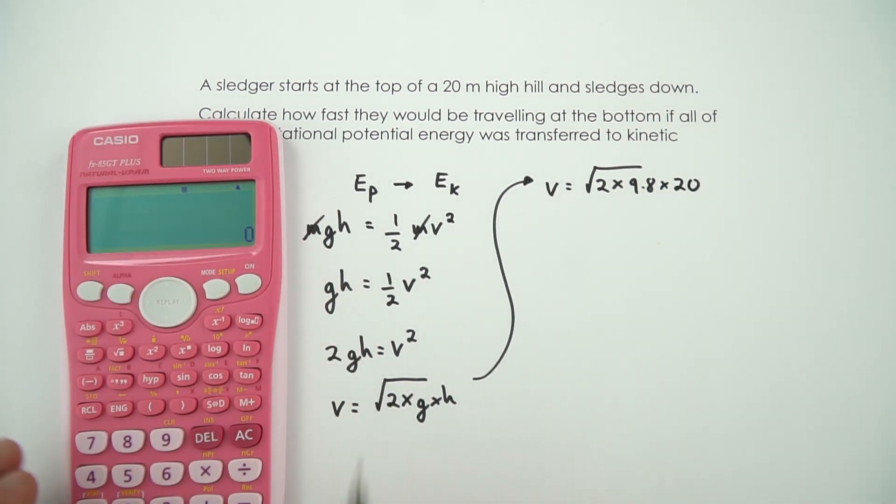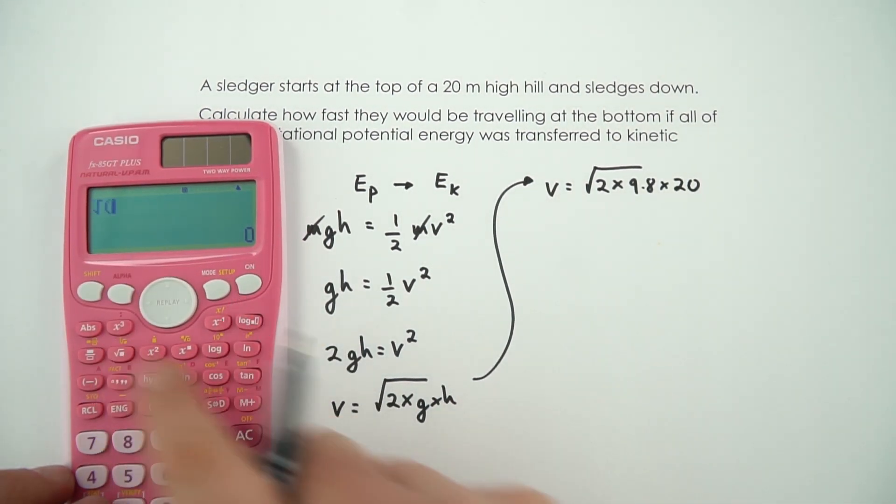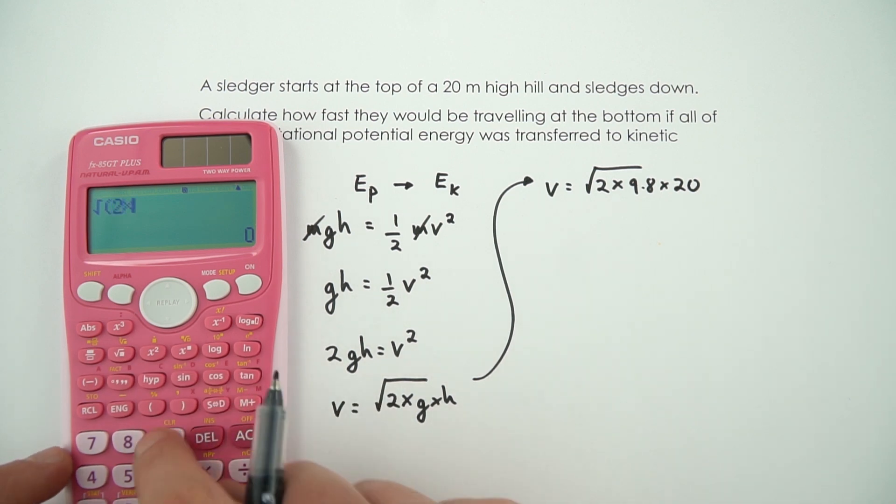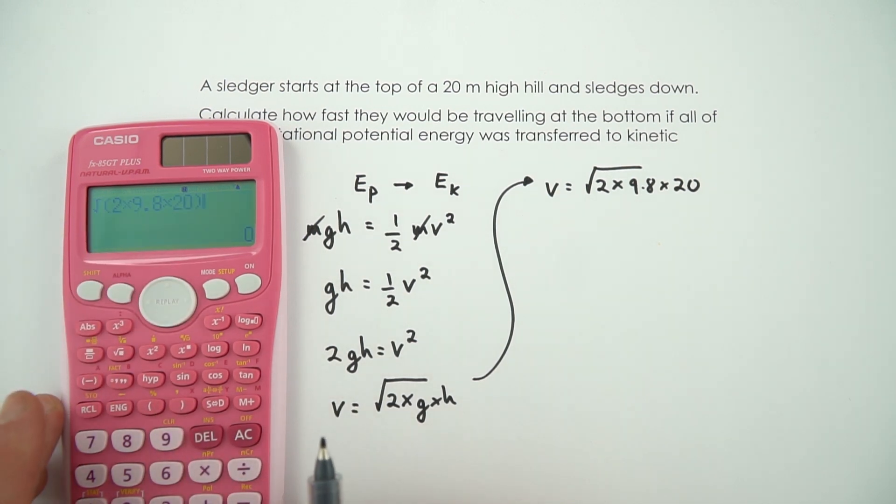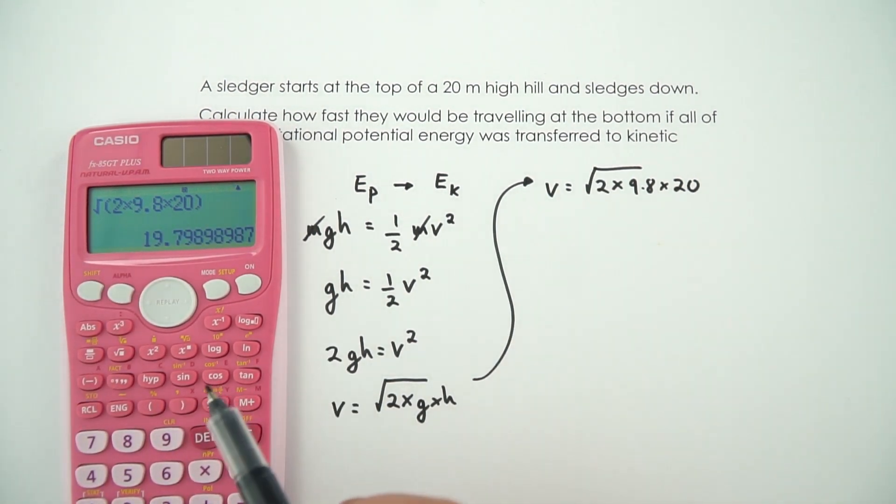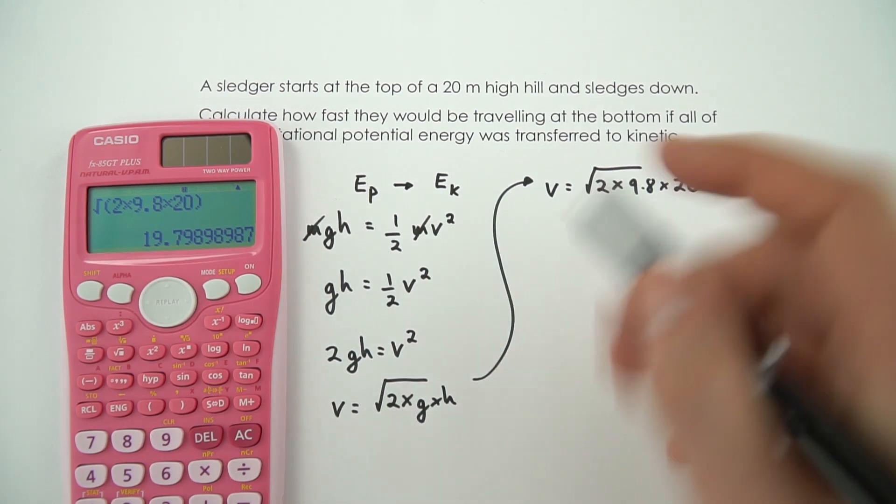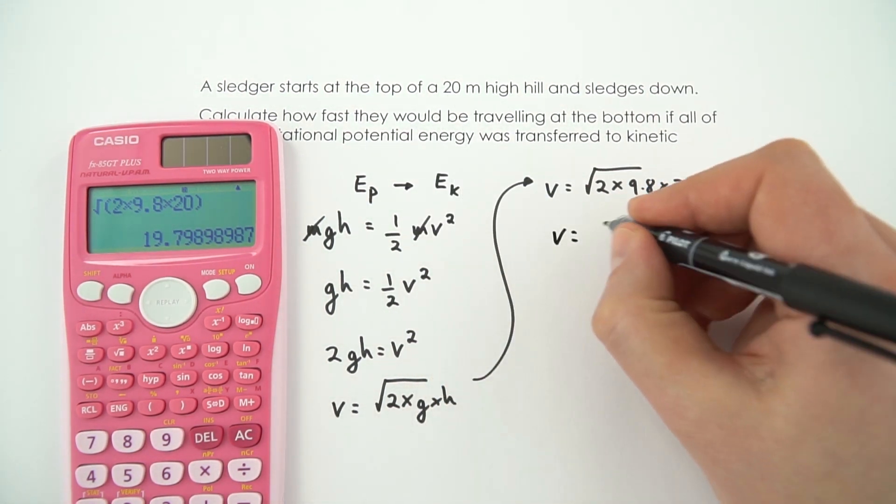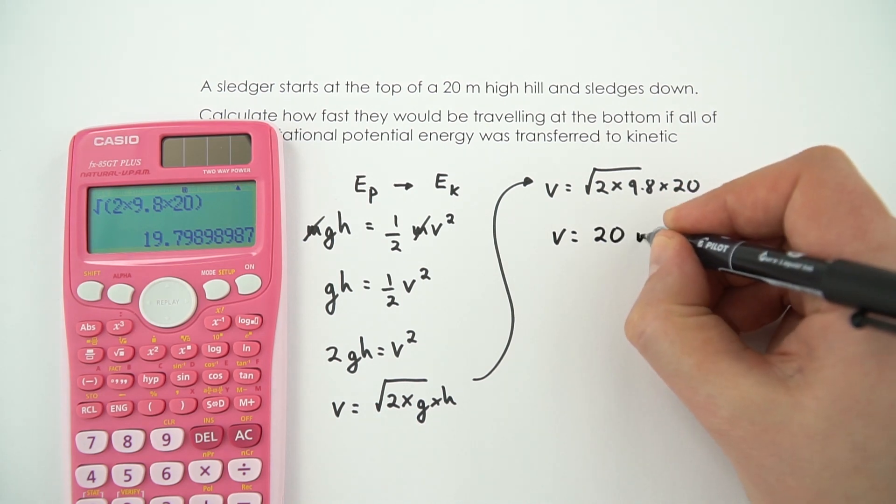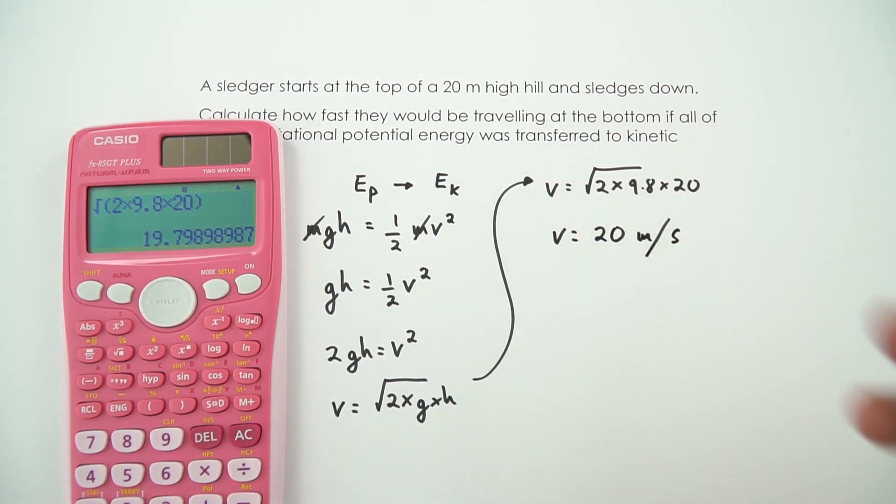Now if I just use my calculator, we want to look at the square root of 2 times 9.8 times 20. And that's all square rooted, so I'm going to close the brackets there. And that then gives a value of 19.79, which to two significant figures, like my height, is going to be a speed of 20 metres per second. Pretty quick.